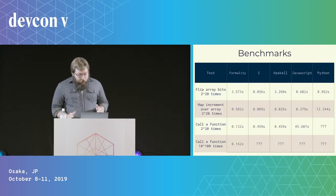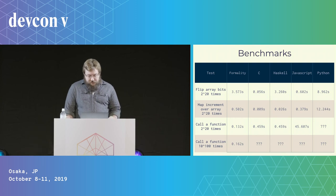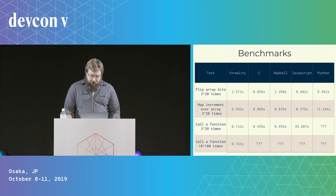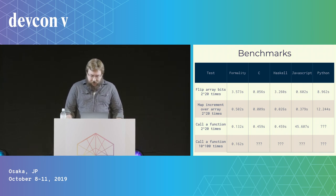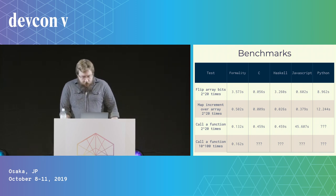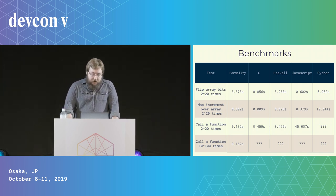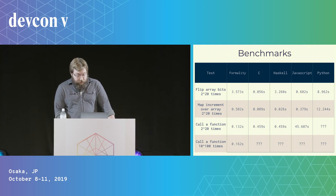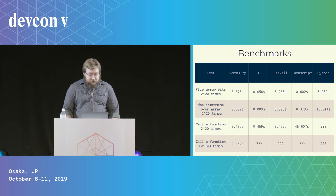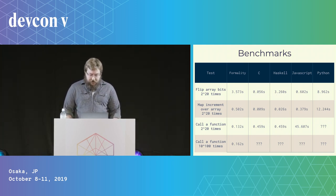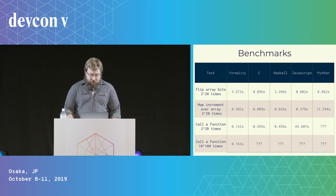For code with lots of higher-order functions, Formality is extremely fast right now. But there's still substantial overhead, which makes us only moderately fast on average at the moment. We think in future our interaction net model will pay a lot of dividends here. Performance is really critical to us for getting people to adopt Formality and use it to build lots of great software.